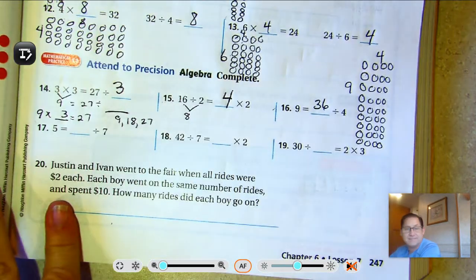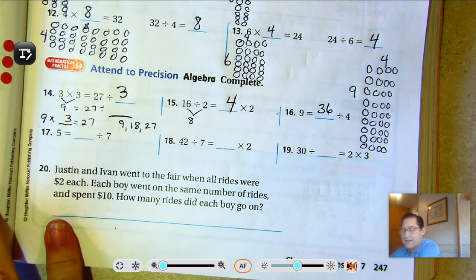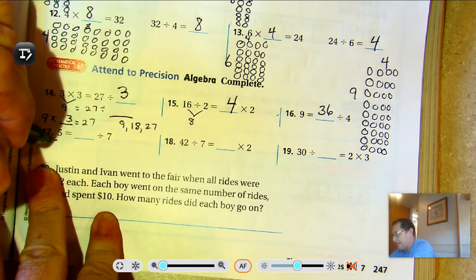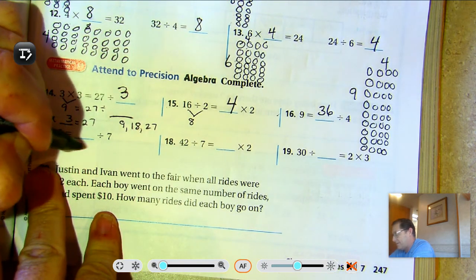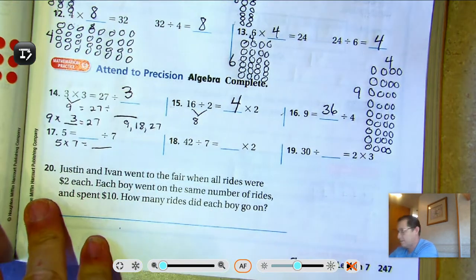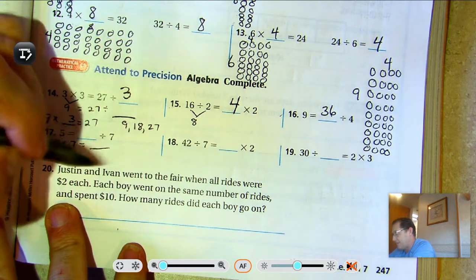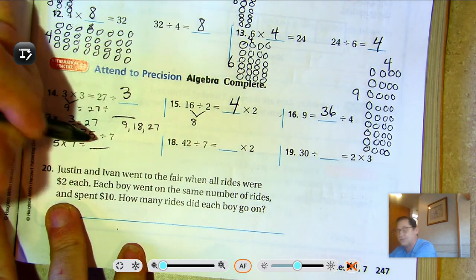Number 17, 5 equals some number divided by 7. That's the same as saying 5 times 7 equals something. So 7 sets of 5 is 35.